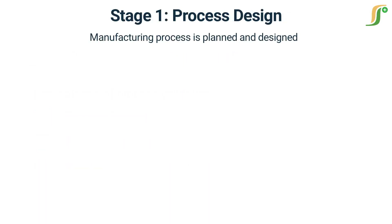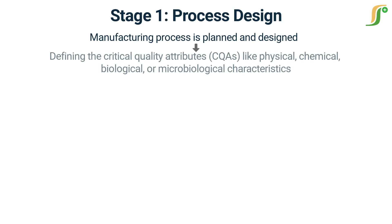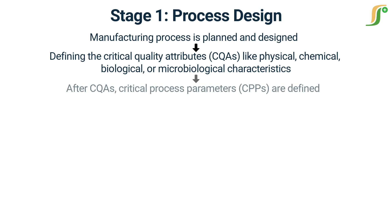The first stage of process validation is process design. During this stage, the manufacturing process is planned and designed. This involves defining the critical quality attributes of the drug product, which are the physical, chemical, biological, or microbiological characteristics that affect the product's safety and efficacy. Critical quality attributes may include factors such as the drug's purity, potency, and stability.